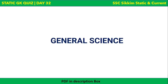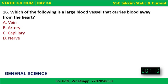Now we move to General Science — Biology questions. Question 1: Which of the following is a large blood vessel that carries blood away from the heart? The correct answer is artery. Arteries are the large blood vessels which carry blood away from the heart, while veins are the blood vessels which carry blood towards the heart.